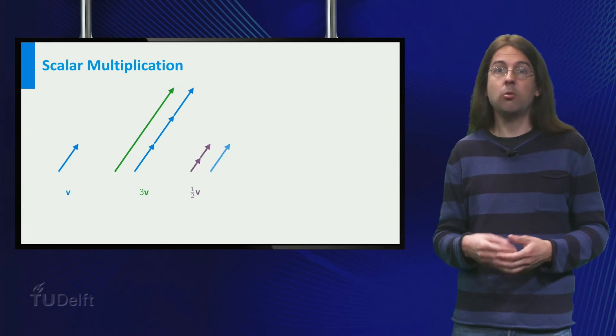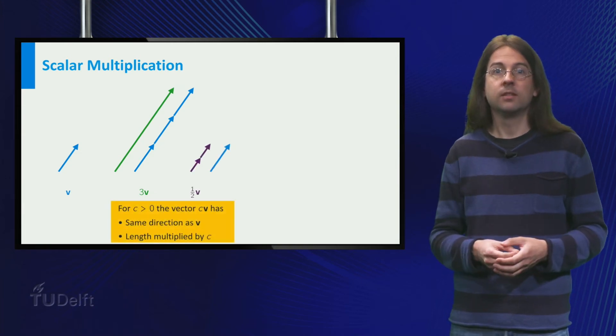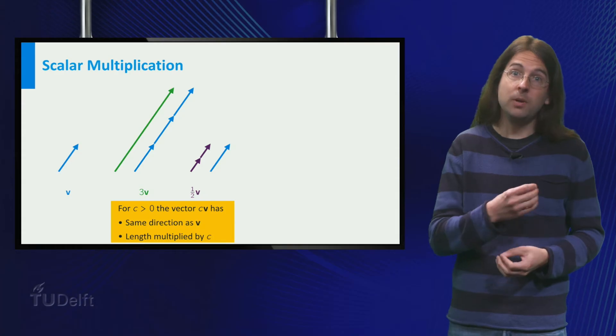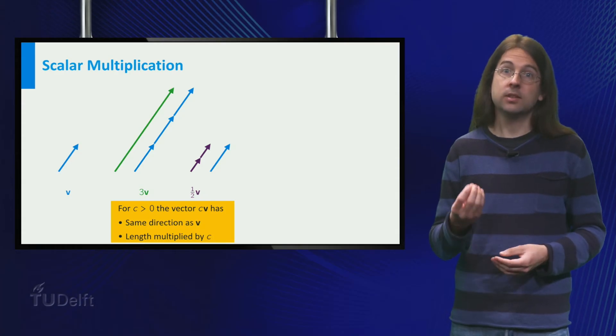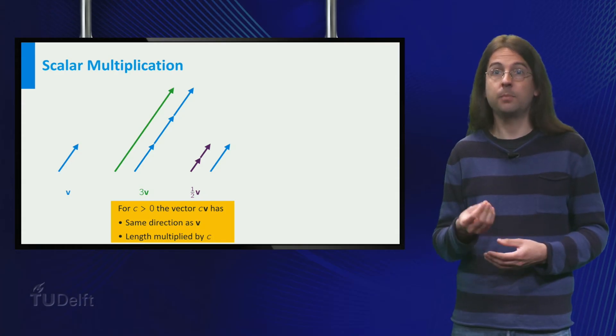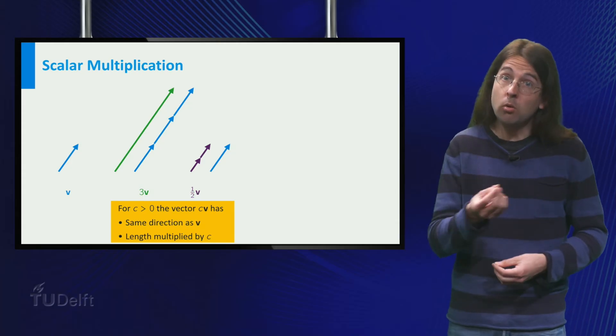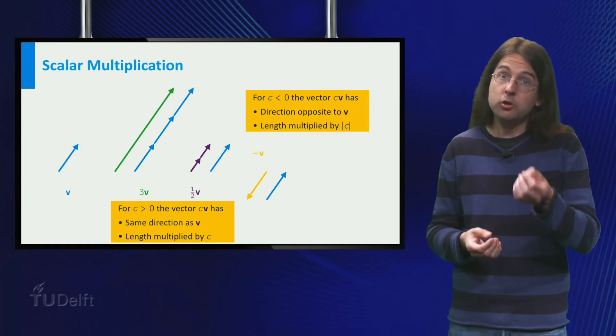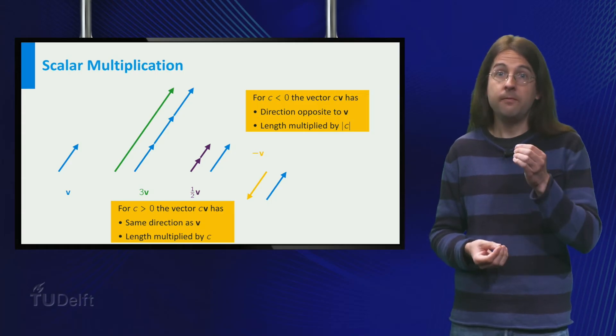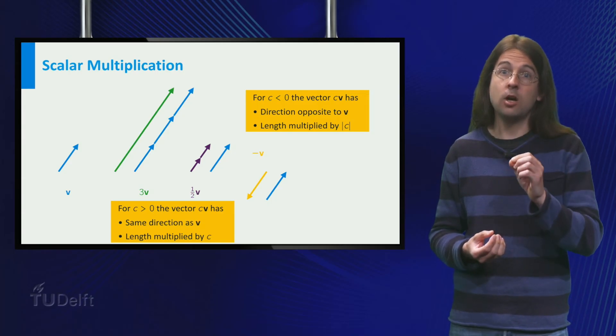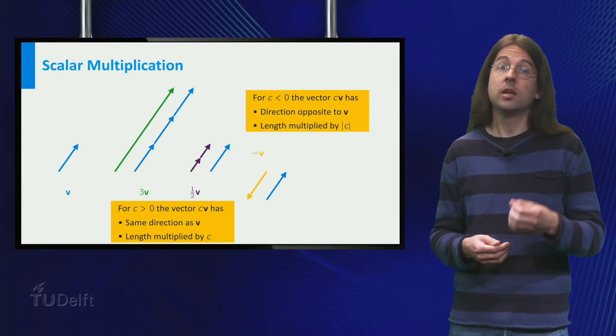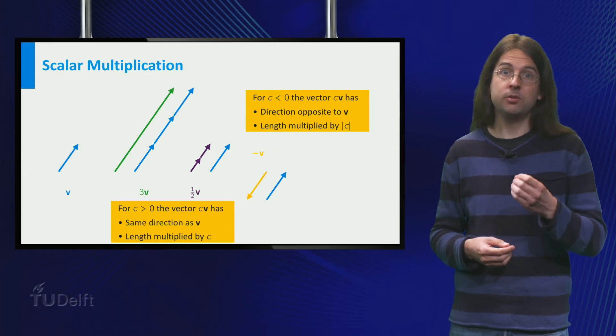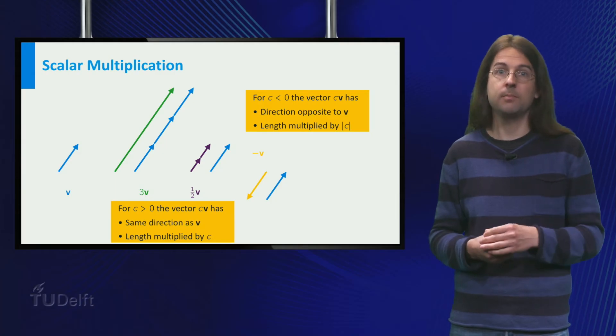But of course we can now also half a vector. Indeed multiplying by any positive number just scales the length of the vector by that number. We can also multiply a vector by minus 1. If we multiply by minus 1, we flip the direction of the vector to its opposite value. The length is multiplied by the absolute value of minus 1 that is 1, so it stays the same.